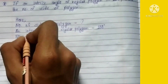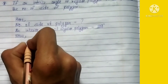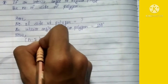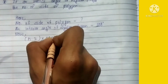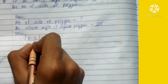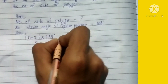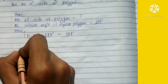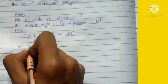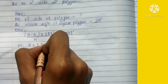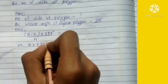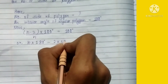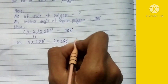Now here we are going to use the formula to find an interior angle of a regular polygon. The formula is: (n minus 2) into 180 degrees, divided by n, equals the given interior angle of the regular polygon, which is 108 degrees.